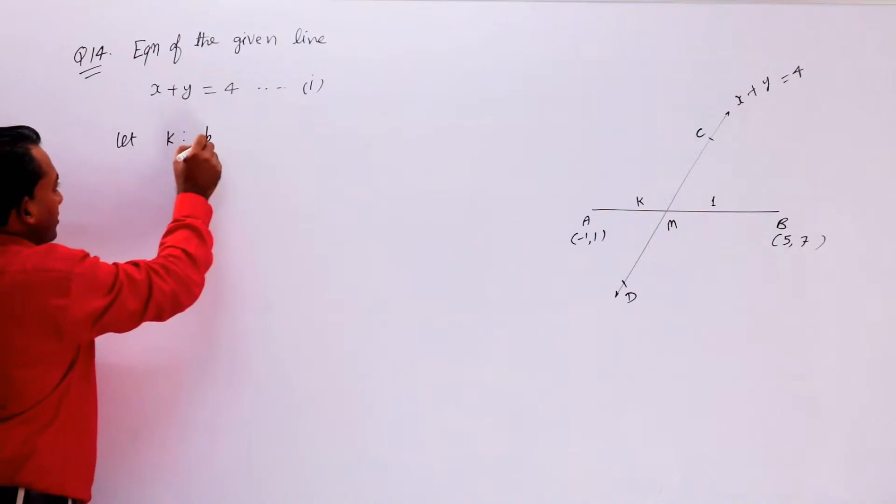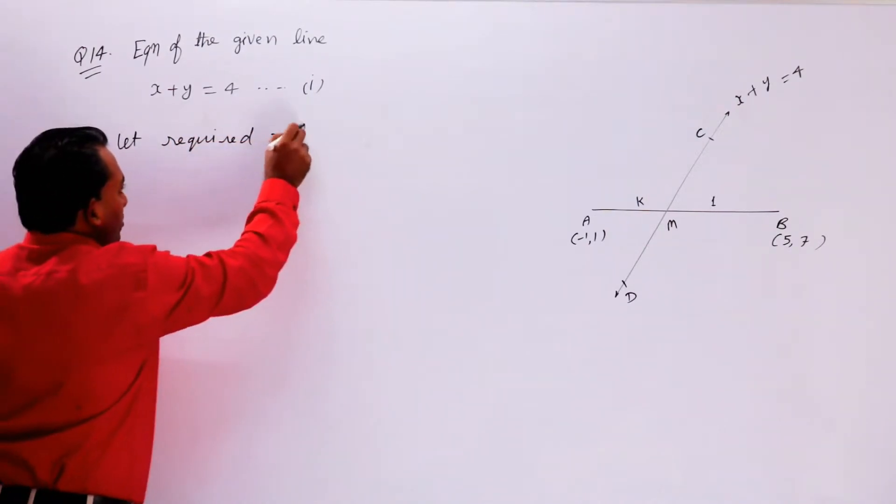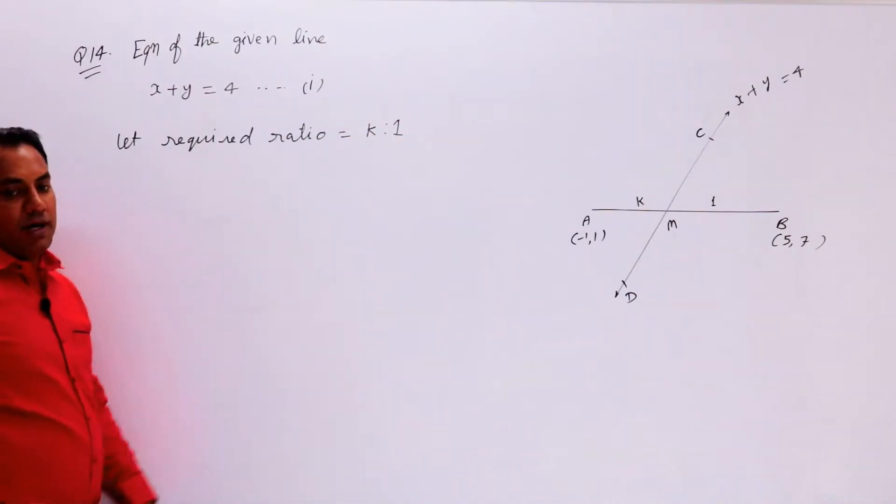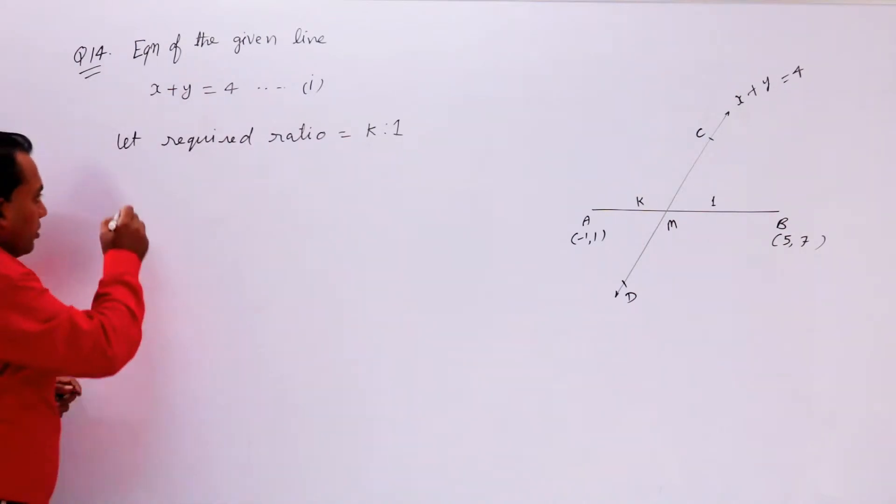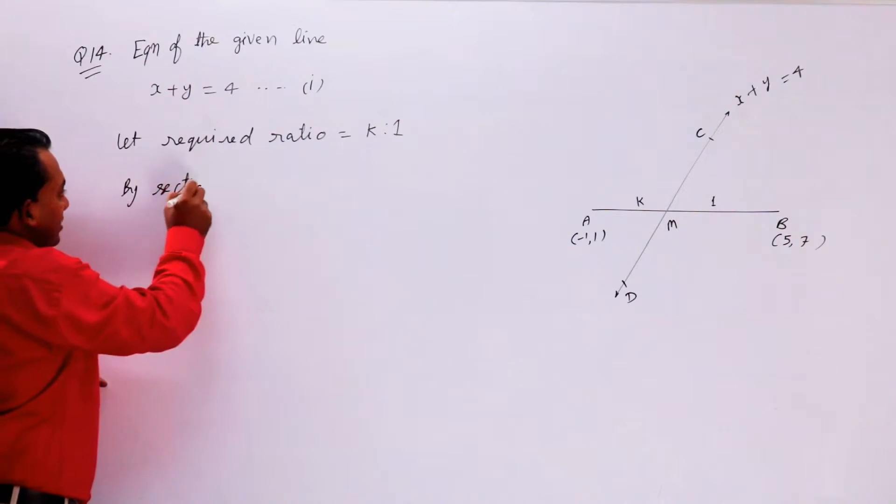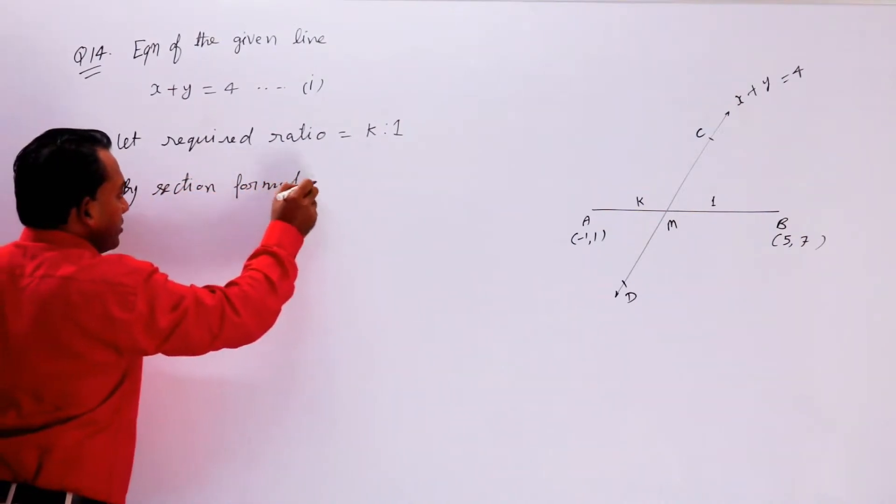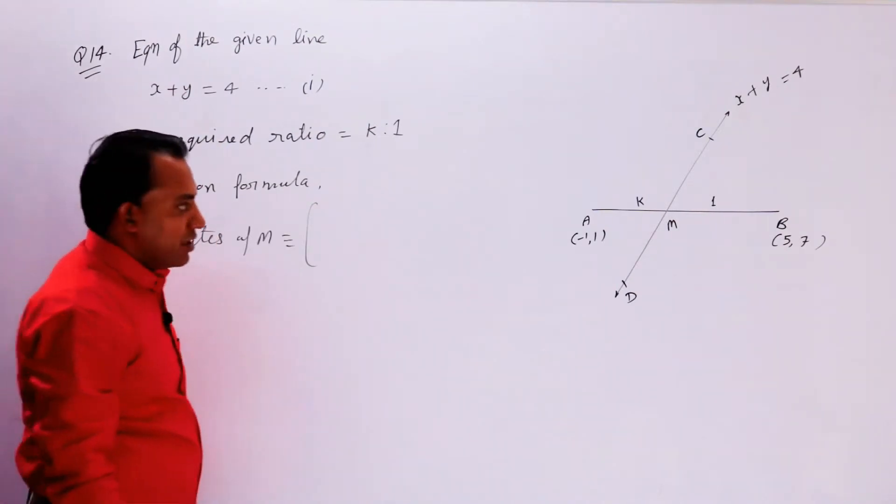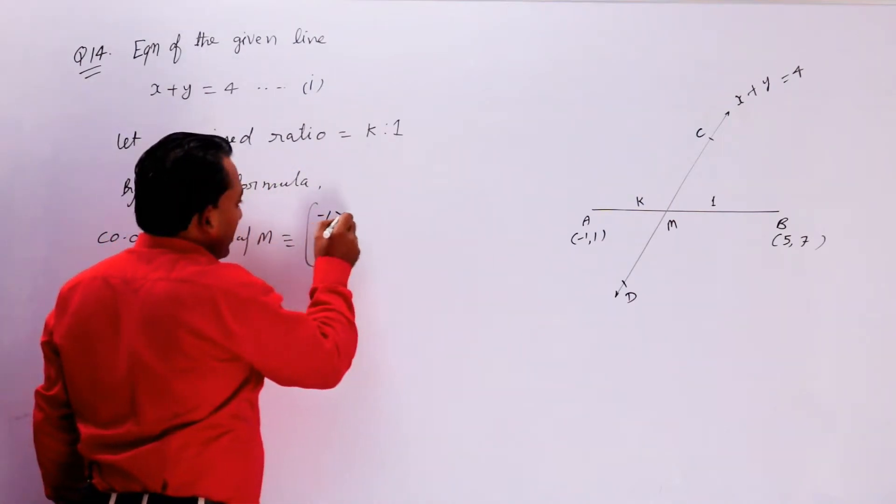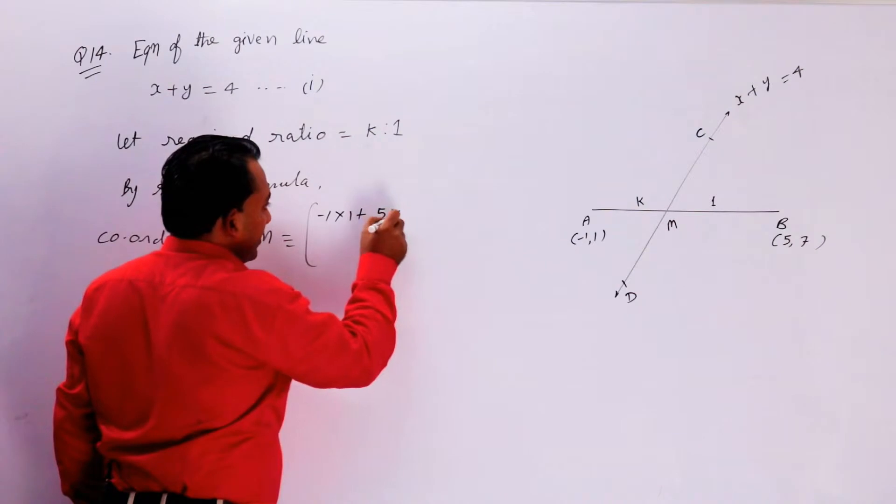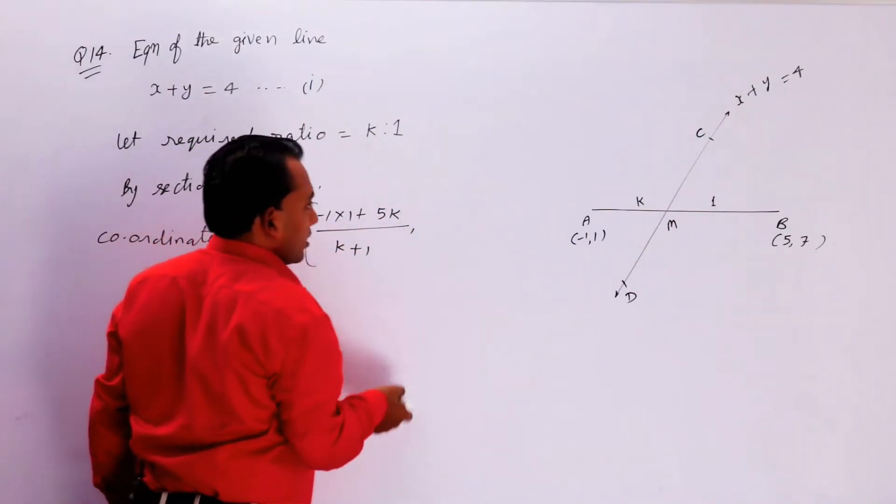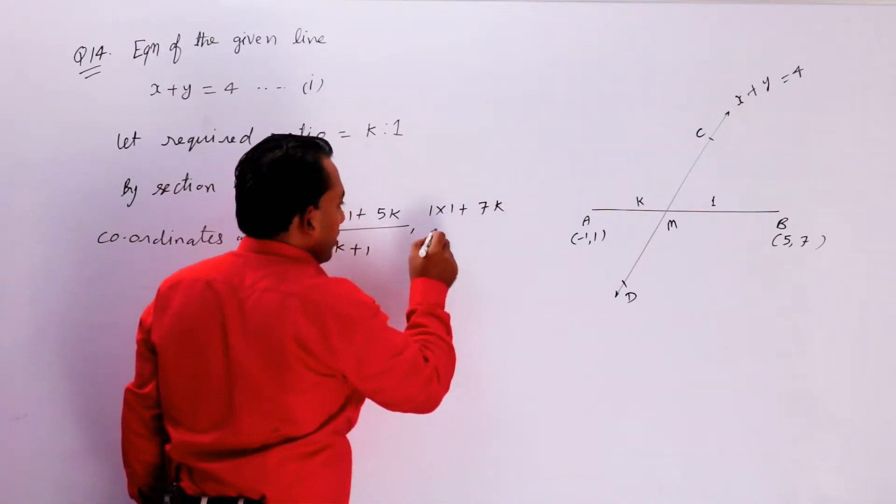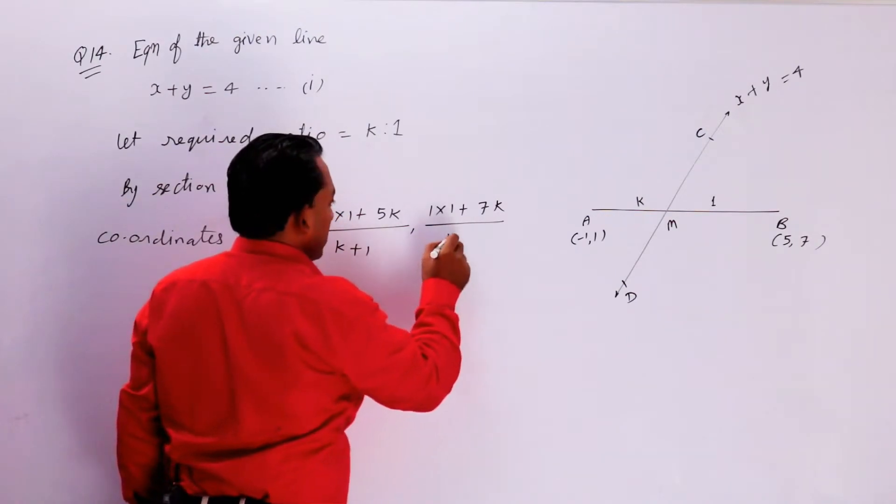Let the required ratio be k ratio 1. By section formula, we can find the coordinates of M. The coordinates of M are (-1 × 1 + 5k)/(k + 1) and (1 × 1 + 7k)/(k + 1), which equals (5k - 1)/(k + 1) and (7k + 1)/(k + 1).